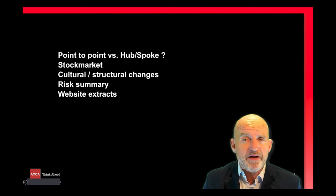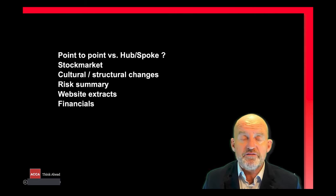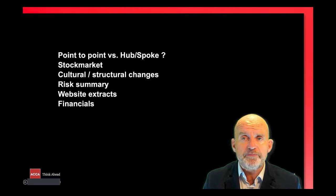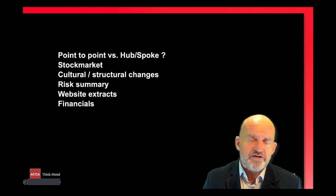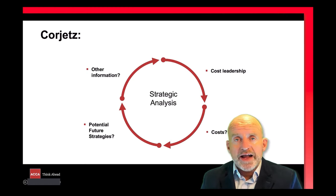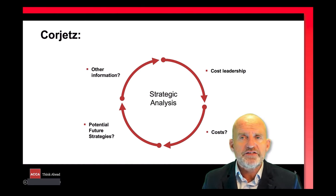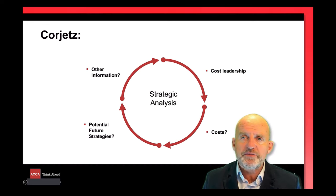I'd also be thinking about KPIs which would be appropriate to these values so I could check whether the values were in fact being achieved. And finally we're provided with information on financial performance, punctuality, customer satisfaction and costs breakdown. I'd suggest a review of these to see if there are any anomalies, and the cost breakdown confirms what are CoreJet's main costs.